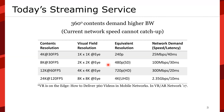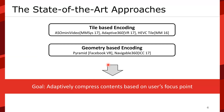We want to make a streaming service work on wireless and common network services. There are two categories of current approaches: tile-based encoding, such as OmniVideo MMC17, Adaptive 360 VR17, HEVC tile, and ACMMM-16; and geometry-based encoding, such as pyramid encoding by Facebook VR and Navigatable 360 in ICC17. The goal of these approaches is to adaptively compress content based on users' focus points — providing high quality where users are focused and low quality where they are not, thereby saving network bandwidth.